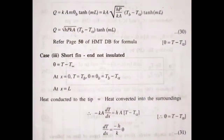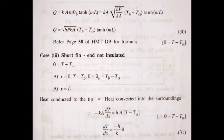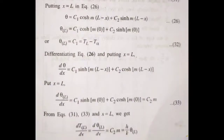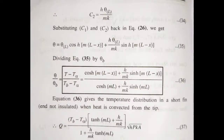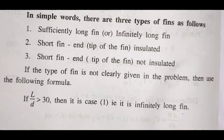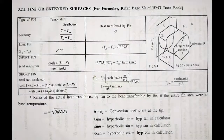Case 3: Short fin with end not insulated. The boundary condition is: at x = 0, T = T_b, θ = T − T∞. We write the equation and solve for q. This completes all three cases: fin infinitely long, short fin insulated end, and short fin end not insulated.